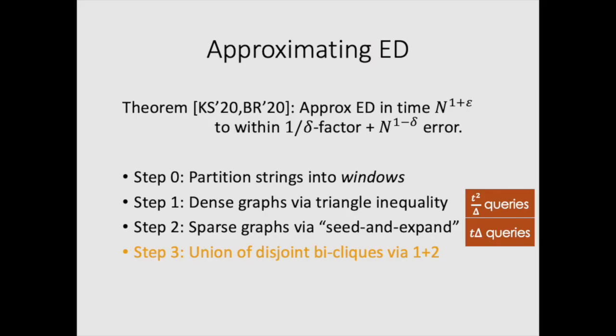Thus, using the methods of BGHS, we can get a t squared over delta query algorithm, and using the methods of CDGKS, we can get a t times delta query algorithm. By putting these two together, you can get optimized around delta equals square root of t.